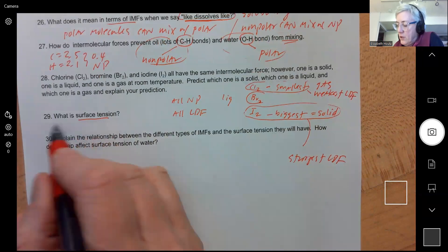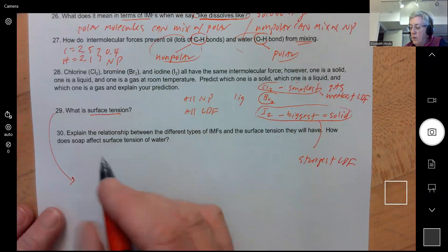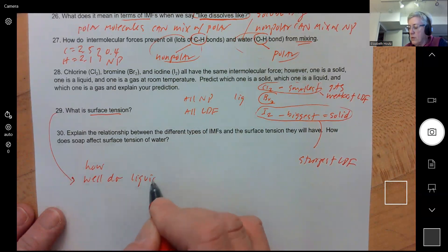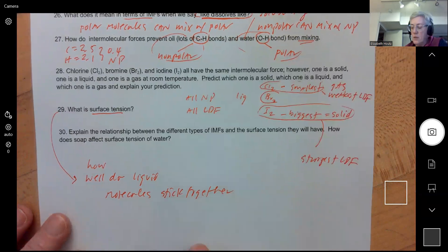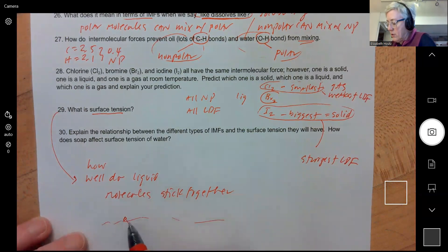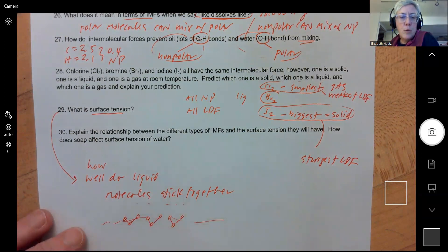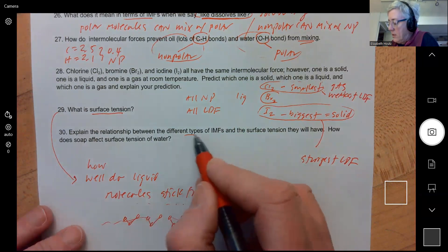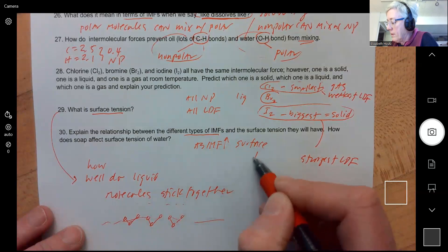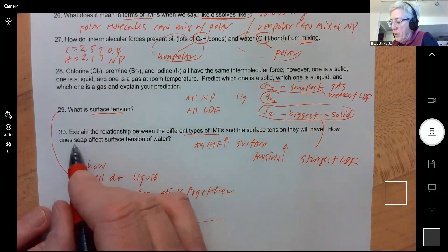What is surface tension? Surface tension means how well do liquid molecules stick together. So water has a very high surface tension. I showed you that video of the water bug, where if this is the surface of the lake and those waters are just totally holding onto each other, that bug couldn't even break through. The bug tried to run across and it could. The relationship between different types of IMFs and the surface tension they will have: same idea. As IMF goes up, surface tension also goes up.